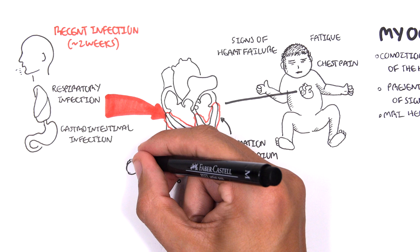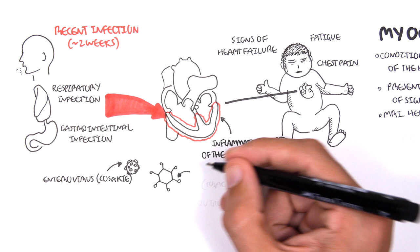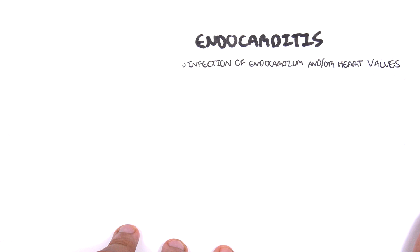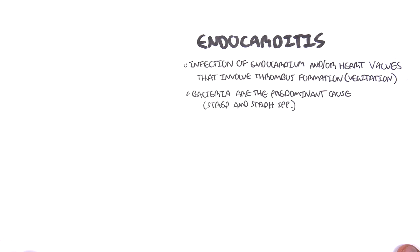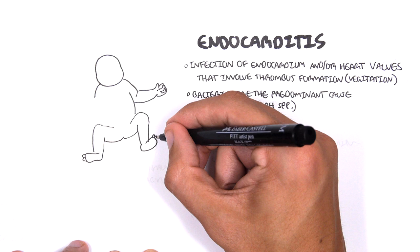There's also another heart infection that can occur in neonates, endocarditis, which is infection and inflammation of the endocardium and/or heart valves, which typically involve thrombus formation known as vegetations. The cause are bacteria, specifically Streptococcus and Staphylococcus species. Signs and symptoms are that of infection such as fever, diaphoresis or sweating, fatigue, arthralgia, and/or myalgia.